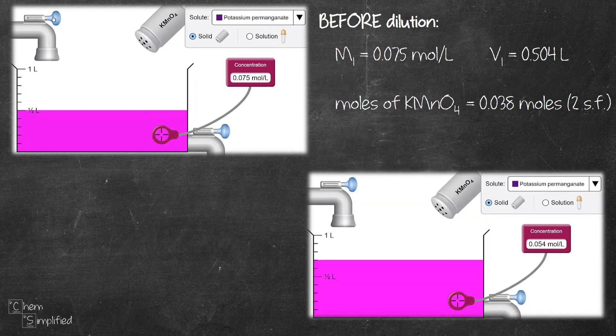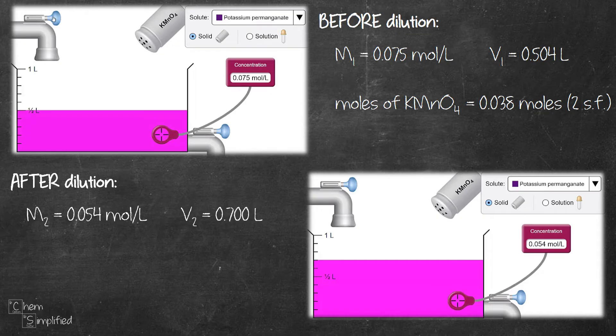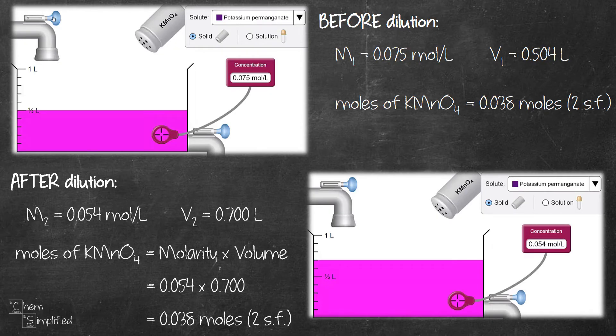Now after the dilution, the concentration is 0.054 moles per liter and the volume has increased to 0.7 liters. Plug in the values and we get the moles is 0.038 moles. Well, what do you know? That's the same as the moles before the dilution.